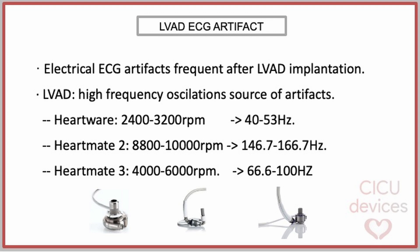The LVADs currently operating in clinical practice are the HeartWare, the HeartMate 2, and the HeartMate 3. Each LVAD model has its own operating revolutions per minute level, generating different frequency interferences as shown in the slide. HeartWare operates between 2400 and 3200 RPM, which corresponds to an oscillation frequency of 40–53 Hz.